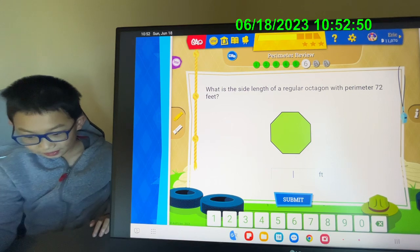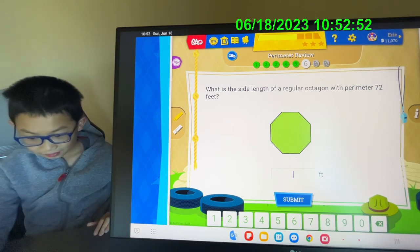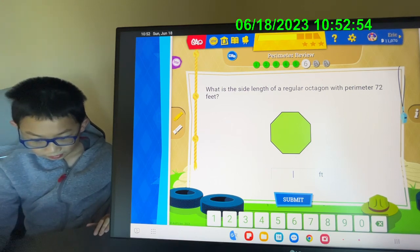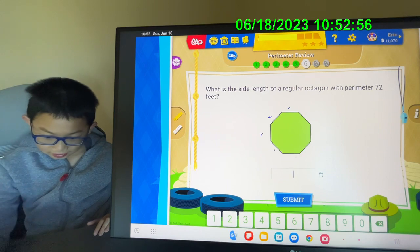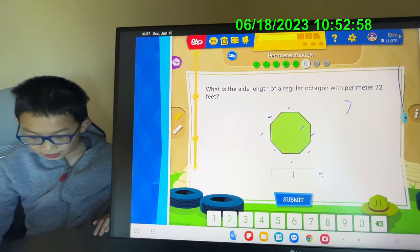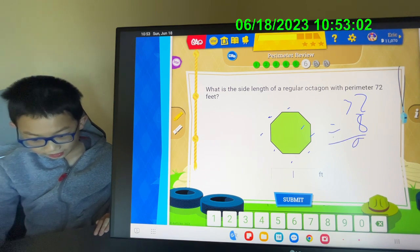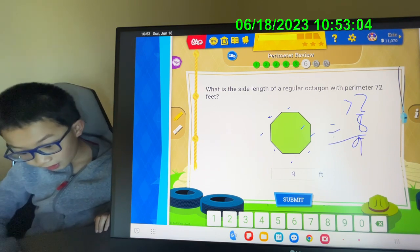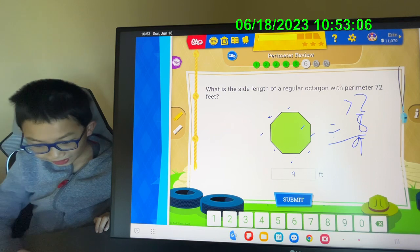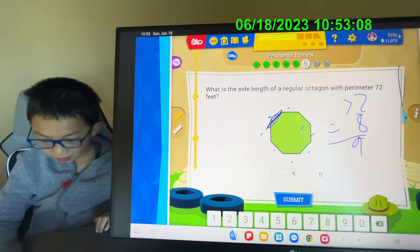This is an octagon. So we know the perimeter and we need to find the sides. It has 8 sides. It's 72 divided by 8 and equals 9. So the side length of the regular octagon is 9.